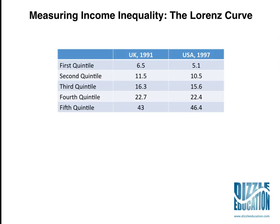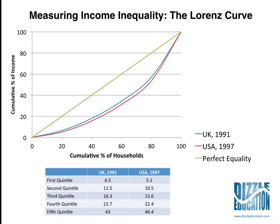Once you've collected that data, you then plot it on a graph. On your axes, you have the cumulative percentage of income and the cumulative percentage of households. All your lines start at 0,0 and finish at 100,100 because we're covering the whole population cumulatively — adding all those numbers together as we go along, covering all the income in the country. For the UK, the first quintile is 6.5, so you'd plot where 20% and 6.5 meet. For the 40% plot, you'd plot where 40% lines up with 6.5 plus 11.5, which equals 18 on the cumulative percentage of income axis.